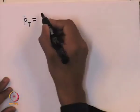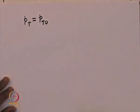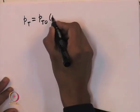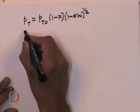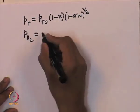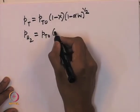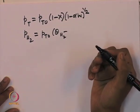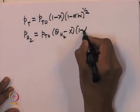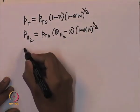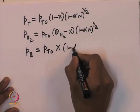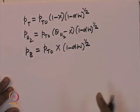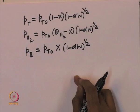The partial pressure of toluene is now given by PT0 multiplied by (1 − x) multiplied by (1 − α·w)^(1/2). The partial pressure of hydrogen is PT0 multiplied by (θ_H2 − x) multiplied by (1 − α·w)^(1/2), where θ_H2 is the feed ratio of hydrogen to toluene. The partial pressure of benzene is PT0 multiplied by x multiplied by (1 − α·w)^(1/2). Now we have all the information needed to solve the equation.